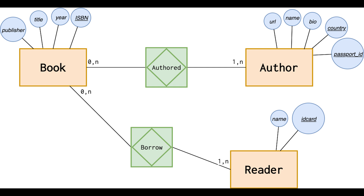Let's do a quick review. In this diagram we have book, author, and reader entity types. Book has publisher, title, year, and ISBN attributes, with ISBN being underlined as the unique primary key. Author has URL, name, bio, country, and passport ID attributes, with passport ID and country being primary keys. Reader has name and ID card, with ID card being the primary key. For the book-author relationship, a book needs a minimum of one author and can have a maximum of N authors. An author doesn't need to have a book but can have as many as they want. For book-reader, a book can have a minimum of one reader and a maximum of N readers, and a reader doesn't need to borrow any books — so zero up to N.